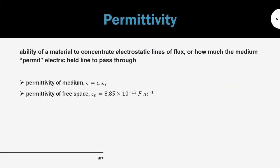The next concept is permittivity. The definition is the ability of a material to concentrate electrostatic lines of flux — in simple words, how much the medium permits the electric field lines to pass through. The permittivity of the medium is epsilon, given by the formula epsilon equals epsilon-naught multiplied by the relative permittivity. In most cases, we approximate the permittivity of air to the permittivity of free space.